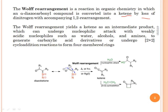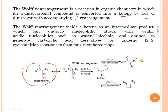The Wolff rearrangement yields a ketene as an intermediate product, which can undergo nucleophilic attack. When the diazo ketone yields a ketene by loss of dinitrogen, this ketene further reacts with nucleophiles such as water, alcohols, and amines to generate carboxylic acid. In the Wolff rearrangement, the ketene generated from the diazo ketone undergoes nucleophilic attack with weakly acidic nucleophiles — water, alcohols, and amines — to give carboxylic acid.